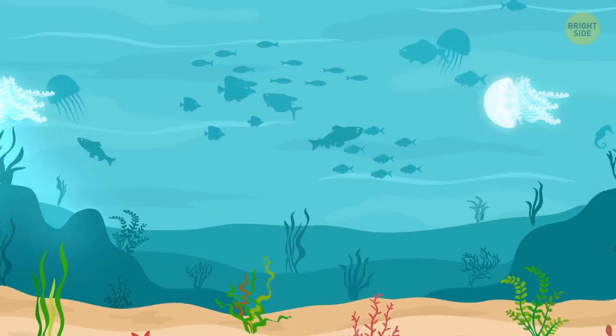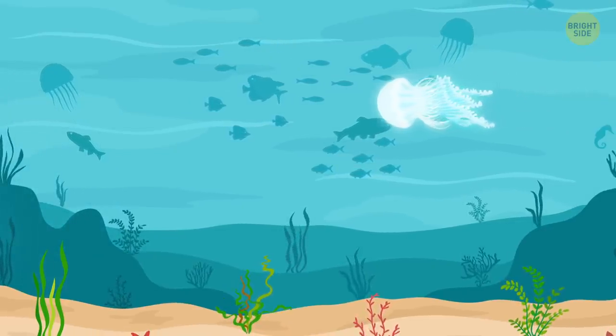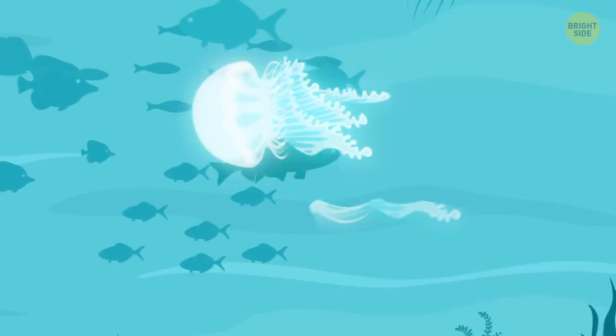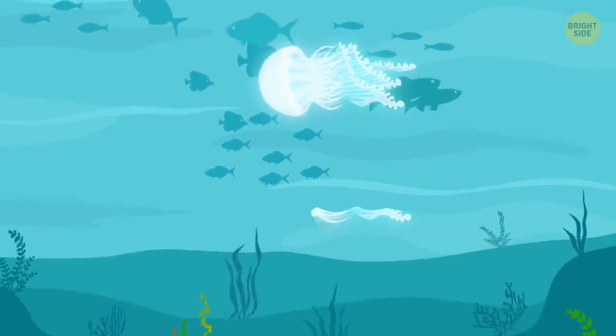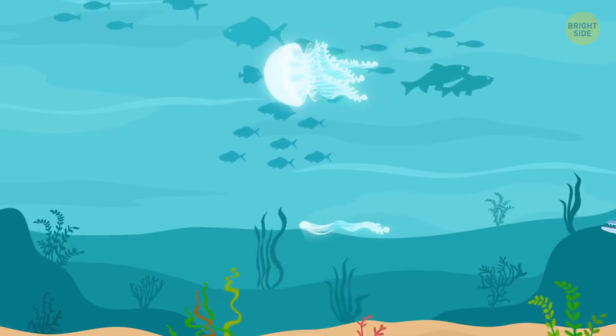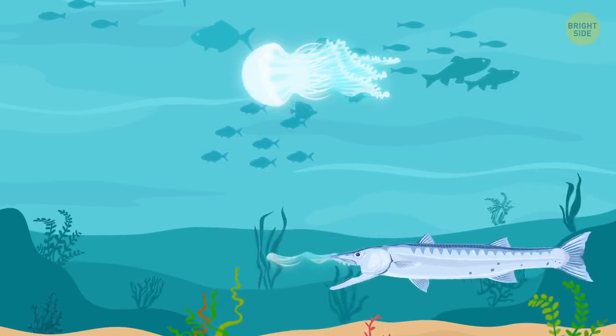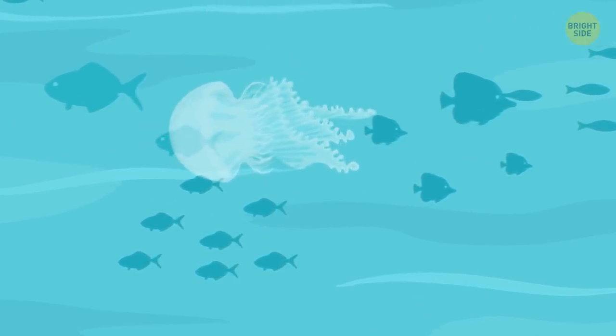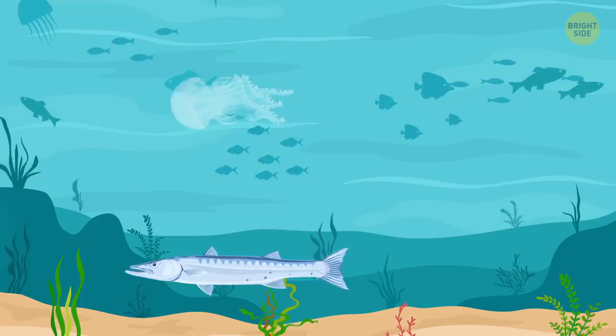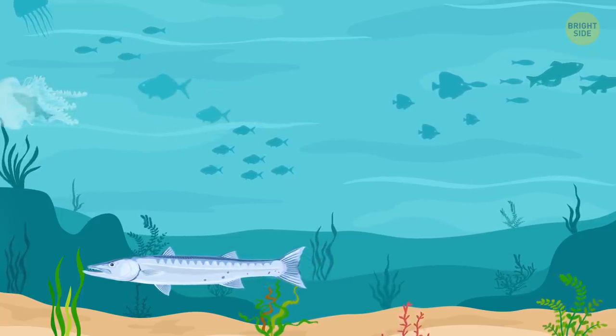If that doesn't work, and this is really creepy but also cool, a jellyfish can detach one of its flashing tentacles and leave it behind. As it falls through the water, it goes on flashing and lures the predator away. Then Mr. Jelly douses his own light and sneaks off. Even cooler, he'll regrow that tentacle in a process called regeneration.